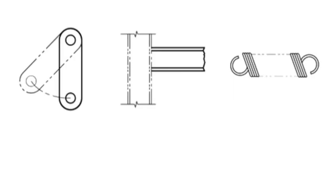Phantom lines are composed of alternating one long and two short dashes, evenly spaced, with a long dash at each end.